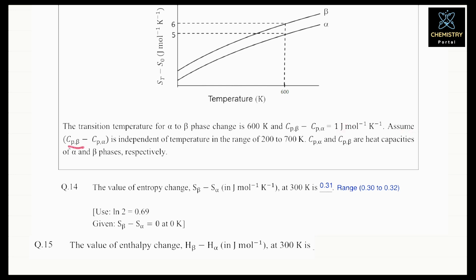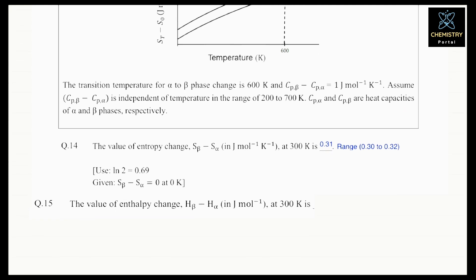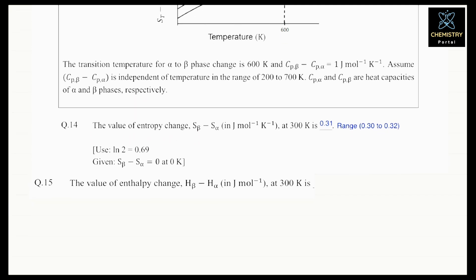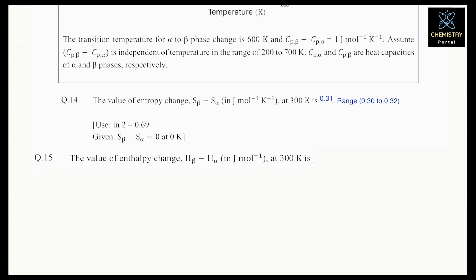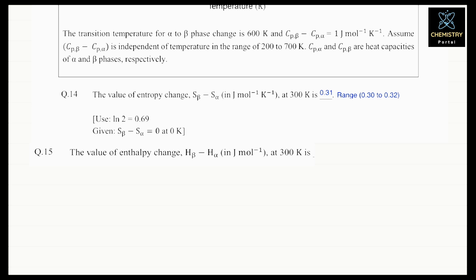Given that Cp_beta minus Cp_alpha equals 1 joule per mole per Kelvin, and this value is independent of temperature in the range 200 to 700 Kelvin. ST and S0 are entropies of phases at temperature T and zero Kelvin respectively. We have to calculate the entropy of phase change, S_beta minus S_alpha, at 300 Kelvin.